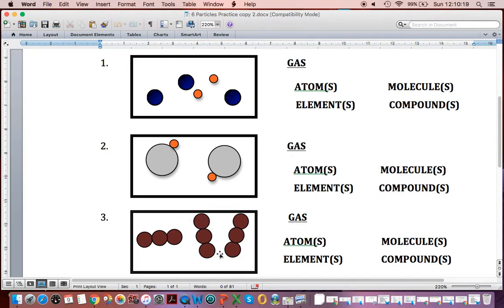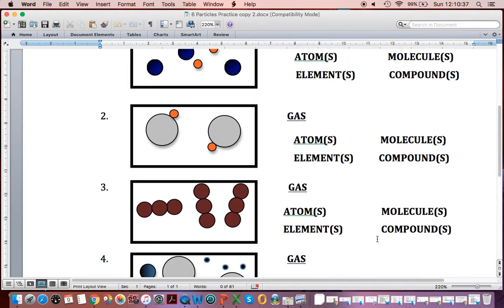Next one, I say atom or molecule. Well, I see atoms stuck together, atoms stuck together, atoms stuck together. So I circle molecules because the atoms are bonded together. Then I want to know element or compound. Well, all the same element, all the same element, all the same element. So I circle element. That could be something like ozone, O3.